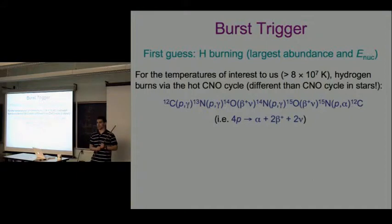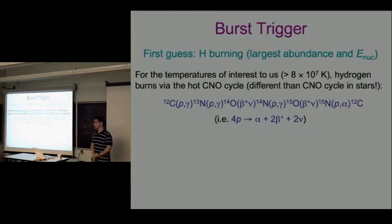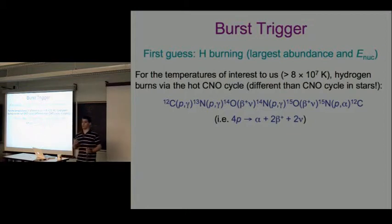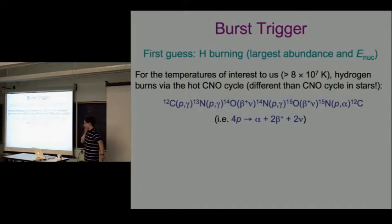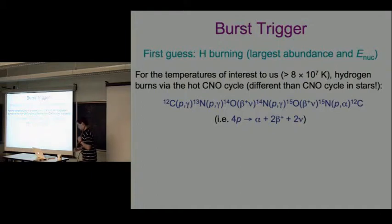For the temperatures of interest - above about 10^8 K, which is a typical temperature in this accreted layer - hydrogen burns via what is known as the hot CNO cycle. This is different from the CNO cycle that occurs in the centers of massive stars, called the cold CNO cycle. Unlike the cold CNO cycle in many massive stars, the hot CNO cycle involves two beta decays of oxygen.